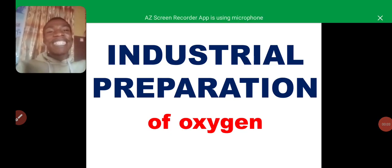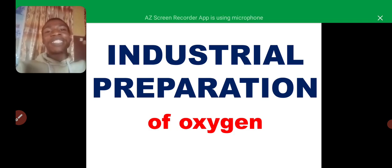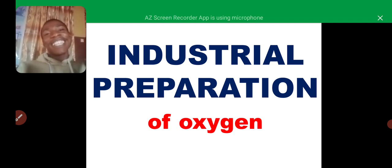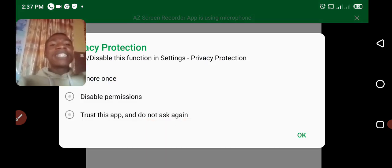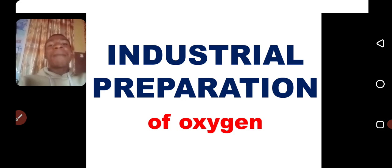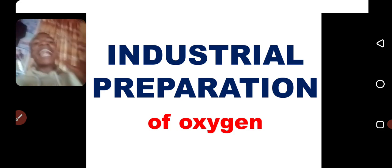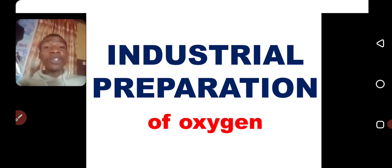I will be looking at industrial preparation of oxygen. In the previous video, we looked at the laboratory preparation of oxygen through the catalytic decomposition of potassium trioxochlorate-5 and through the decomposition of hydrogen peroxide. In this video, we will be looking at how we can manufacture oxygen on a large scale in the industries.